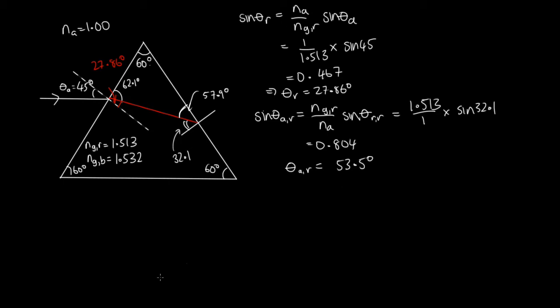So let's sketch that red light leaving the prism now. So it forms a ray down here. And this angle in here is equal to 53.5 degrees.